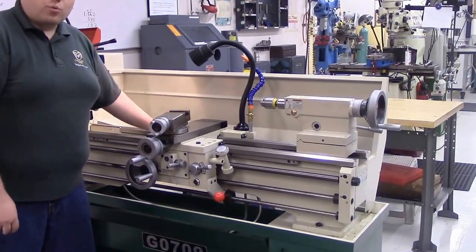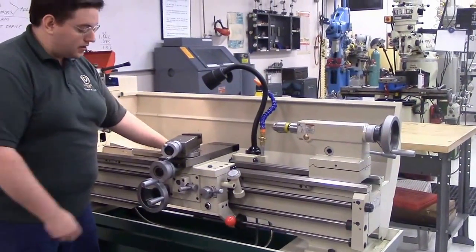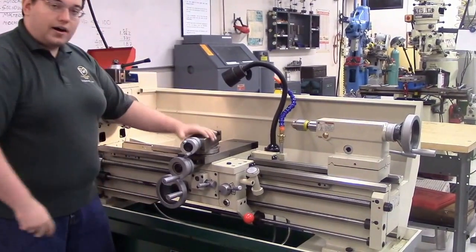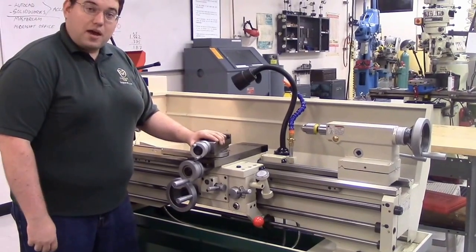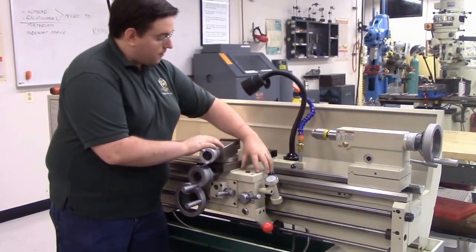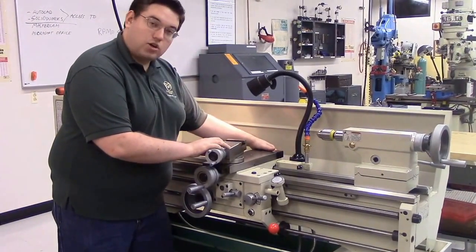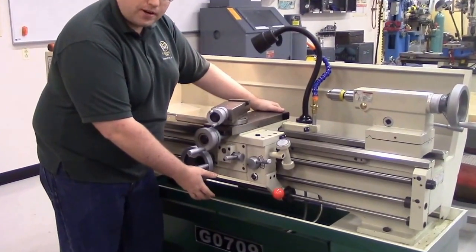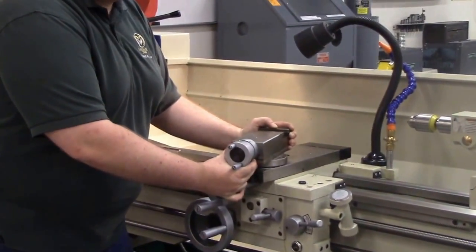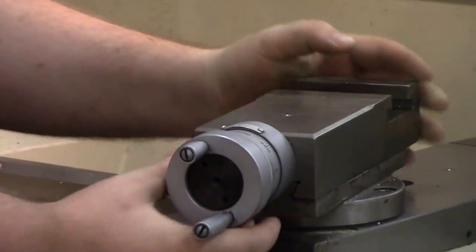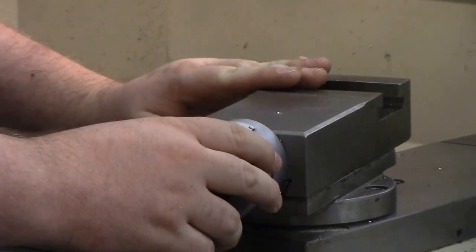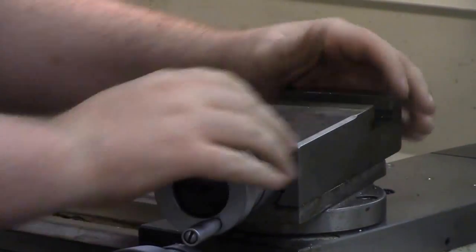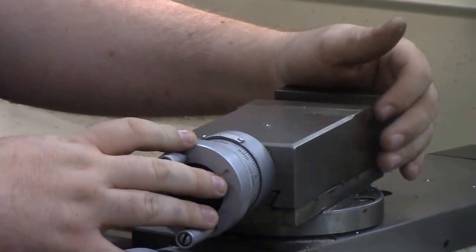On your carriage, you have three major components. You have your saddle that sits across the bed. You have your apron that comes down in front of the bed. And you have your compound rest at the very top of the carriage that allows you to mount your tools, move them back and forth, and if you need to, even swivel it side to side.